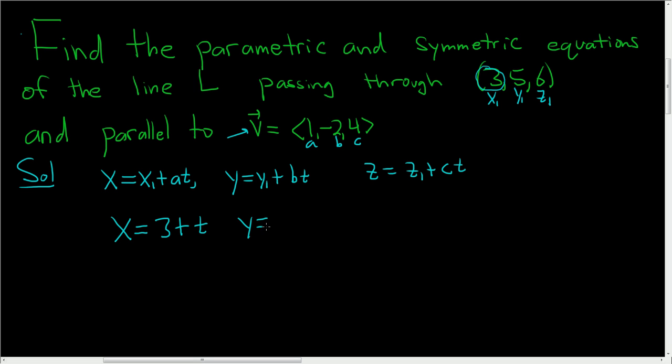y is equal to y1, we said that was 5, so this is 5, and then it looks like it's minus 2t. And then z is equal to 6, and then c is 4, so 4t.